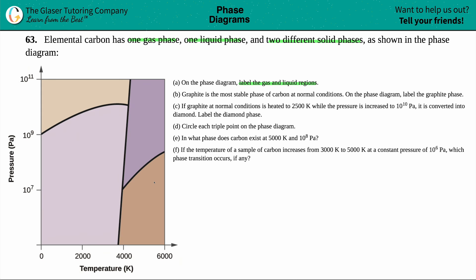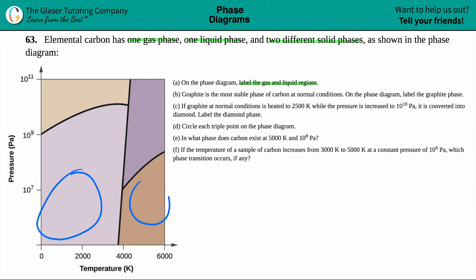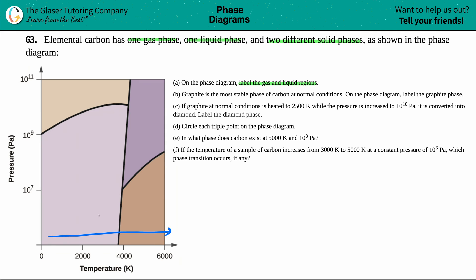The bottom two parts of a phase diagram are always going to be a solid and a gas. Your solid always comes first, then your gas — as you increase in temperature, your substance will sublimate and go from solid to gas. So of the two lowest colors, the gas is always the second one, so this region is carbon in its gas form.